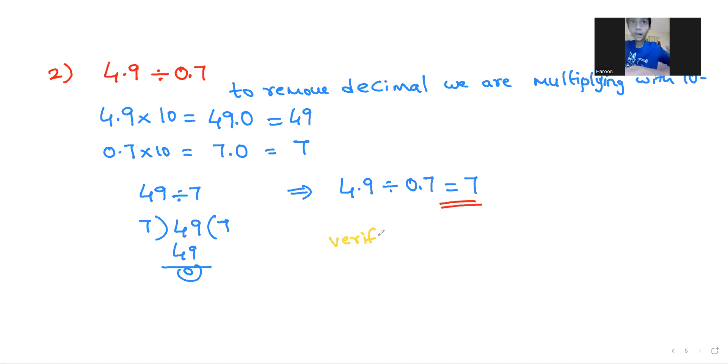One second, I am just writing. 0.7 into 7 is 49. After one digit decimal, so you have to put decimal after nine. Okay.